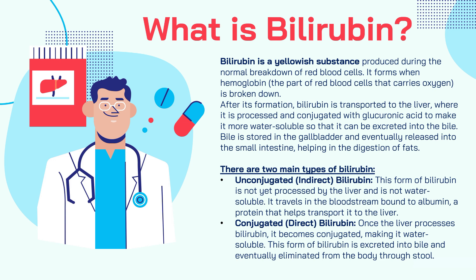Basically, all you need to know is that bilirubin is a yellowish substance produced when red blood cells are broken down. The form produced is the unconjugated or indirect form. This then goes to the liver where it becomes conjugated — the direct form of bilirubin — making it water soluble so it can be excreted out of the body.